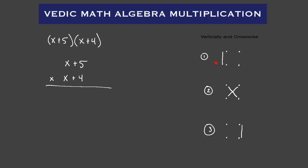The first step is to go straight down the left-hand side. So here's step number one — we're going to multiply X times X. That gives us X squared. So we go ahead and write that in: X squared.